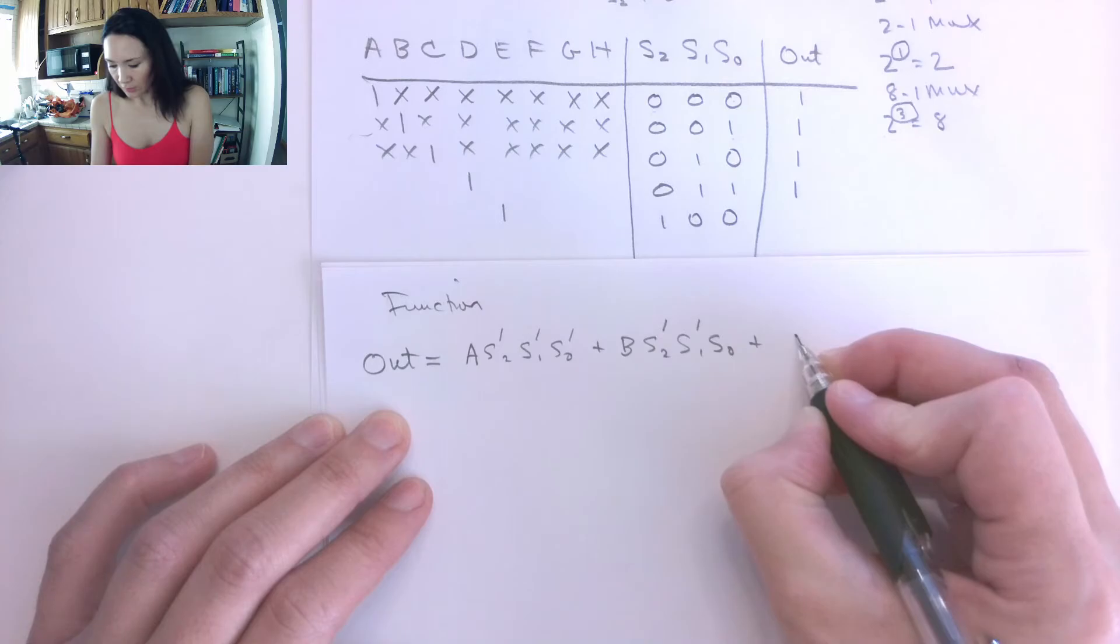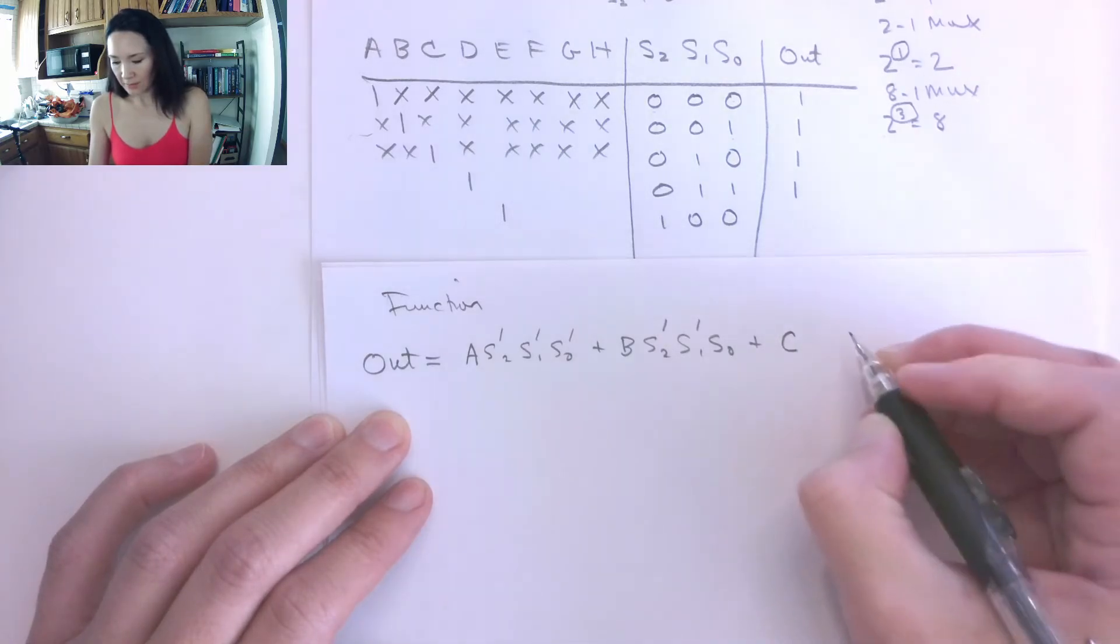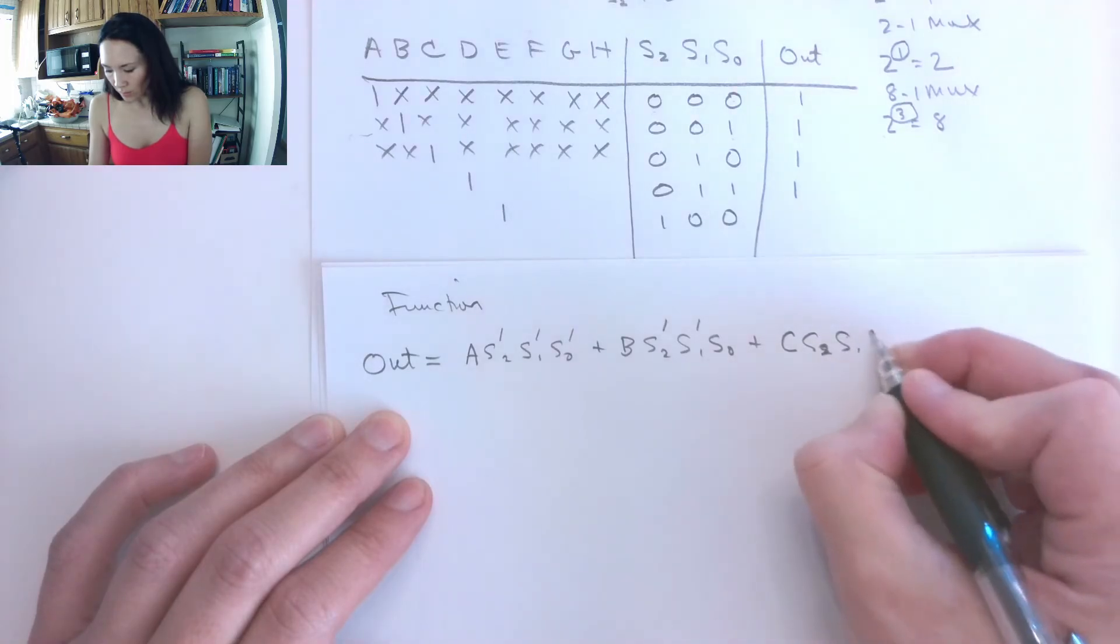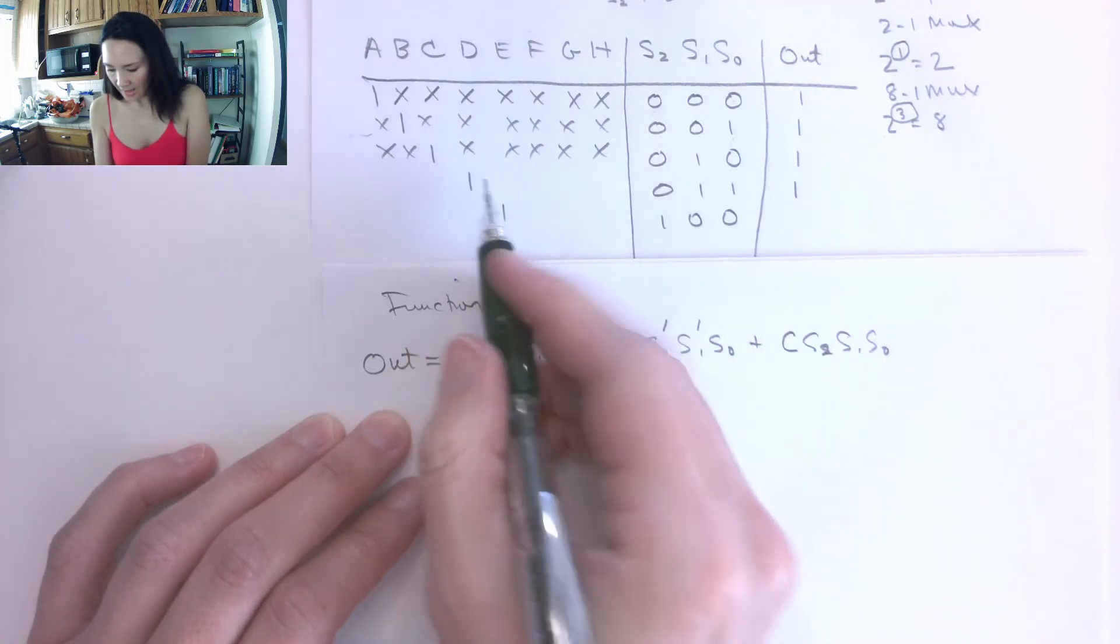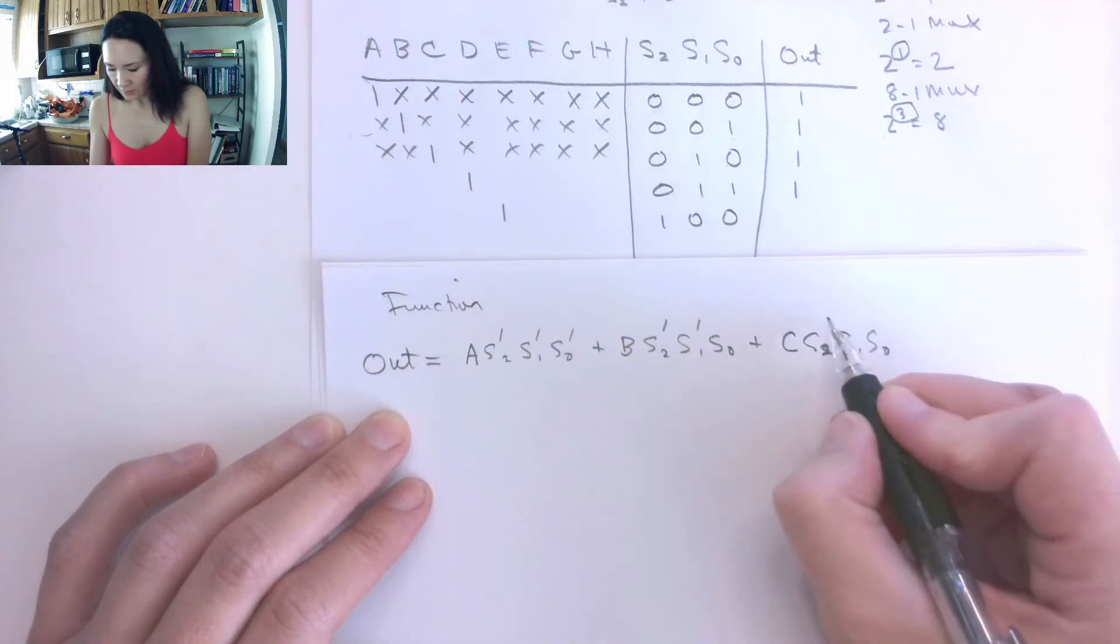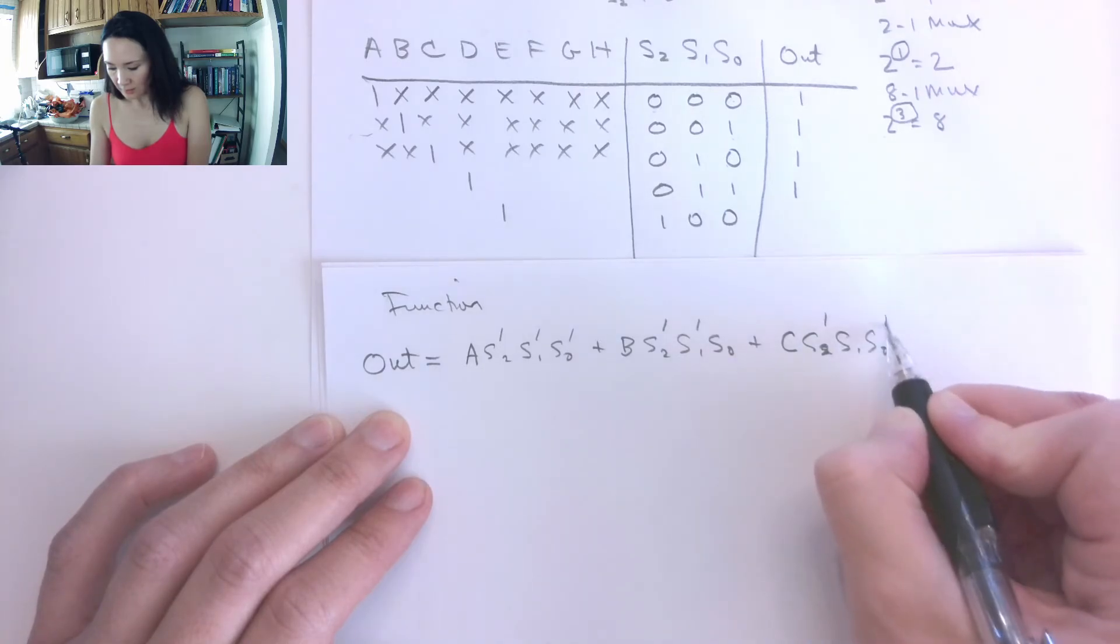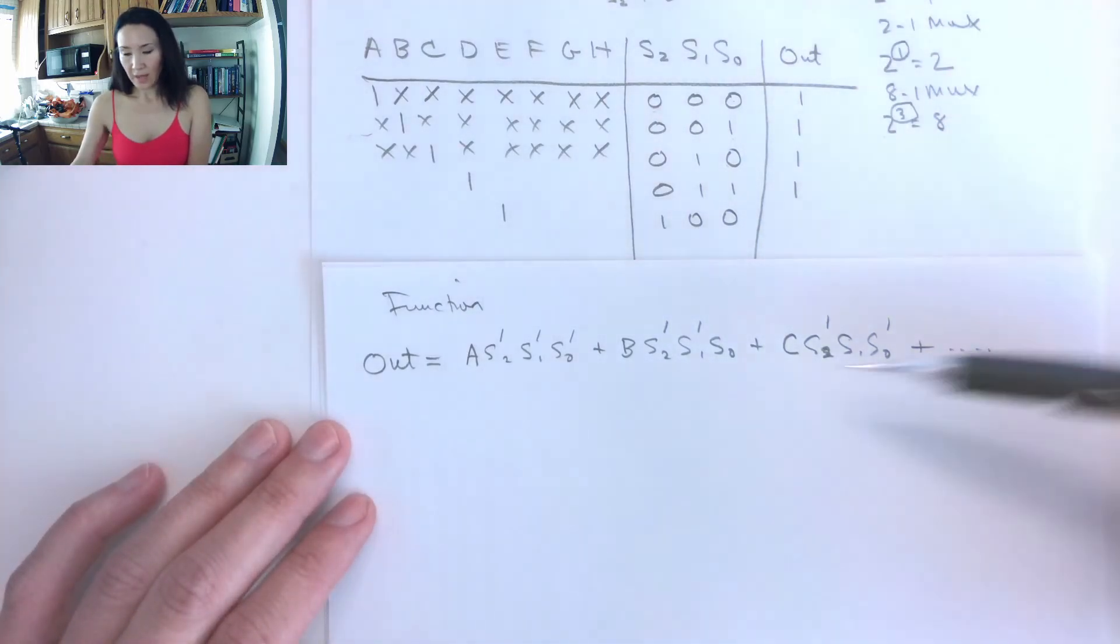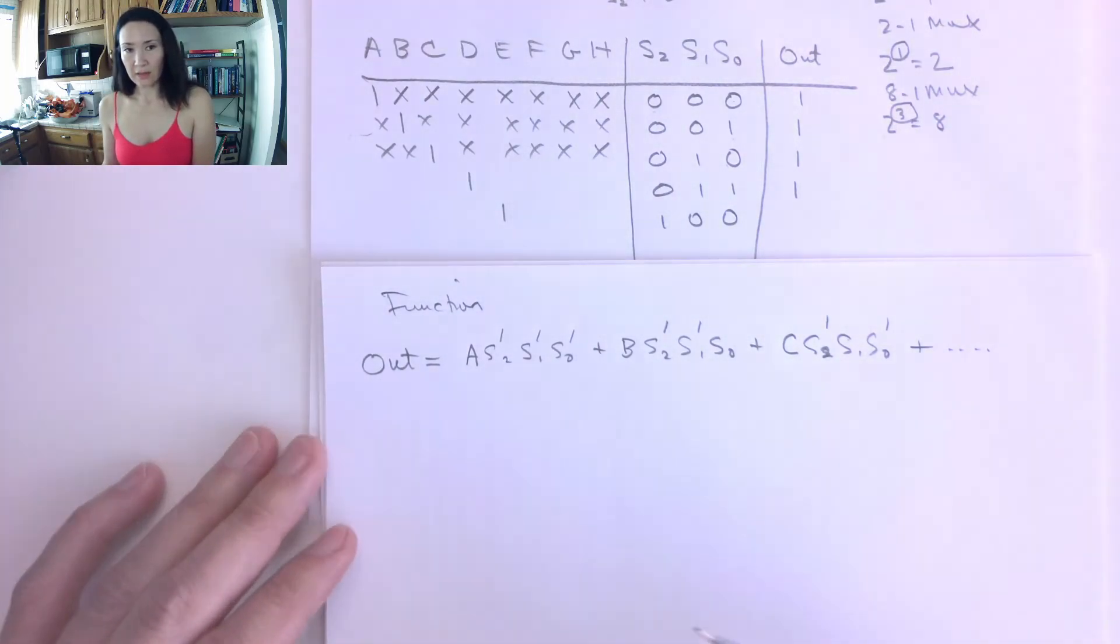From the second product term, we're going to grab B if S2, S1, S0, where S2 and S1 are the ones that are complemented, because S0 has a 1 on it. Okay, great. And then the next product term, we're going to grab C and pipe it to the output if on S2, S1, and S0, we have 0, 1, 0. So complement, not complemented, complemented. So this will continue in this fashion. You're going to have eight product terms all ORed together.